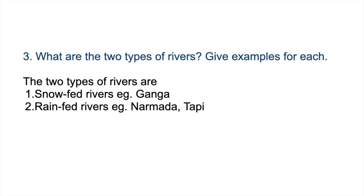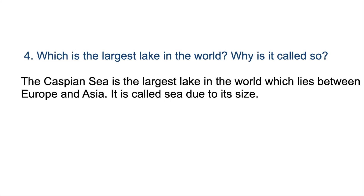What are the two types of rivers? Give examples for each. The two types of rivers are snow-fed and rain-fed rivers. Snow-fed rivers — example: Ganga. Rain-fed rivers — example: Narmada and Tapti. Which is the largest lake in the world and why is it called so? The Caspian Sea is the largest lake in the world, which lies between Europe and Asia. It is called a sea due to its size.